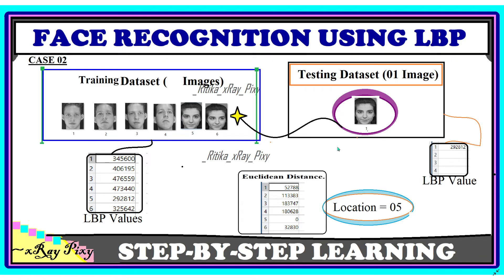In Case 2, there are six images in the training dataset. We calculate the LBP values for all the images in the training dataset and for the query image. The LBP value for the query image matches the fifth training image. We then calculate the Euclidean distance, which is zero for that match, confirming the image is identified at location five.